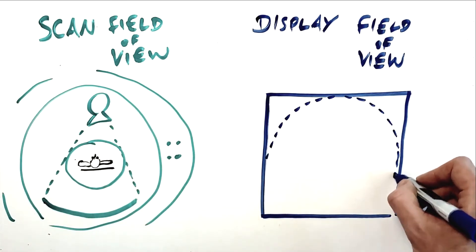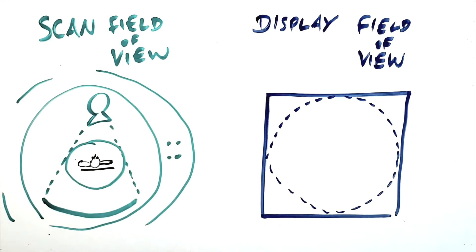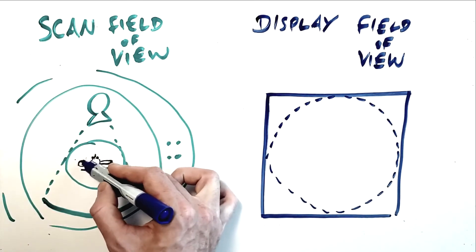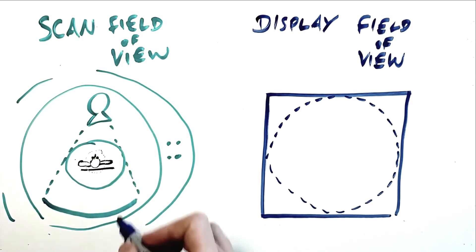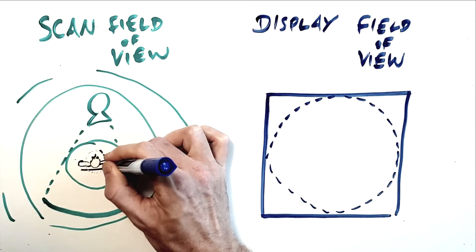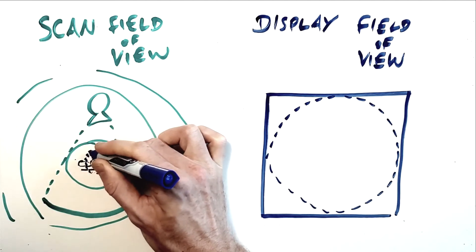The display field of view refers to the field displayed in the image data, which may be smaller than the scan field of view. This parameter can be manipulated after data acquisition, with additional reconstructions produced using a larger or smaller display field of view.